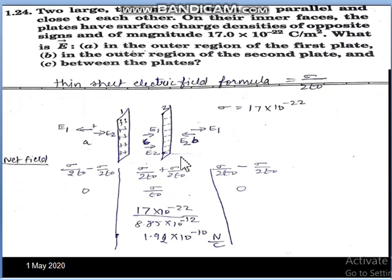So σ/(2ε₀) plus σ/(2ε₀) is the net answer. Finally, if we take LCM: 2σ/(2ε₀), so σ/ε₀ is the answer. We'll put the sigma value from the question and epsilon zero value to get the net field. You can notice...